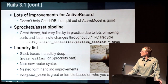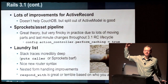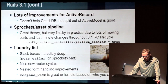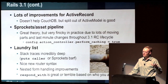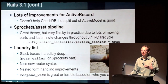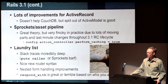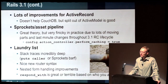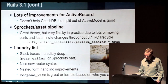Stack traces are now incredibly deep — if you do a puts caller or sprockets barfs, you get 10x the stack trace you used to, so backtrace silencers are your friend. Nice new router syntax, everybody likes that. Nested form handling improvements, everybody likes that. Respond_with has been a love-hate thing: it can replace all the respond_to boilerplate and magically do the right thing. If you walk the straight and narrow path, it works well. But if you have a special case, it's actually more pain than it's worth.